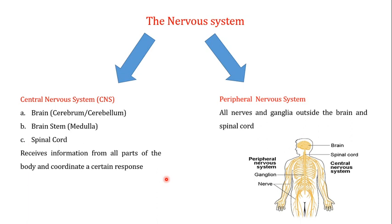When you talk about the nervous system, the whole nervous system is divided into the central nervous system and the peripheral nervous system. The central nervous system contains three main components: the brain — including the cerebrum, cerebellum, and brain stem such as the medulla — and the spinal cord. The function of the central nervous system is to receive information from all parts of the body and coordinate a response. The peripheral nervous system includes all the neurons and ganglia outside the brain and the spinal cord.